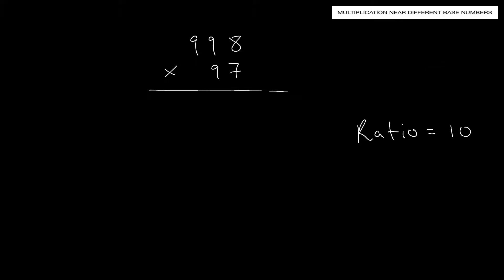To get the answer, find the difference between each base and its number. 1,000 minus 998 gives a deficiency of 2, and 100 minus 97 gives a deficiency of 3. These are the deficiencies from the base numbers — negative 2 for the top and negative 3 for the bottom.